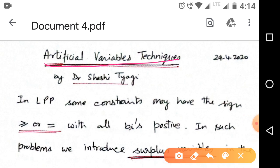For solving LPP, sometimes we have constraints with the sign greater than equal to or equal to, with all BIs positive. For greater than constraints, we need surplus variable, and for equal to we need artificial variables.